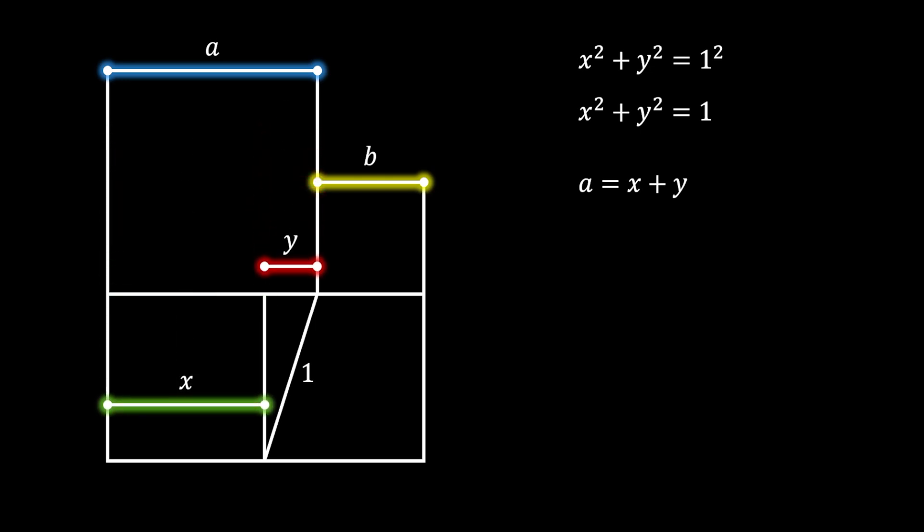Now, since those bottom two squares are identical, that means that the bottom right square also has the side with the value x. And if we again slide the sides x and y upward, we can now see that the side x is equal to y plus b. And from here, we can conclude that the side b of our smaller square is equal to x minus y.